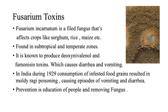Fusarium toxins: Fusarium incarnatum is a field fungus that affects crops like sorghum, rice, maize, etc. Found in subtropical and temperate zones, it is known to produce deoxynivalenol and fumonisin toxins, which cause diarrhea and vomiting. In India, during 1929, consumption of infested food grains resulted in moldy ragi poisoning causing episodes of vomiting and diarrhea. Prevention is education of people and removing the fungus.